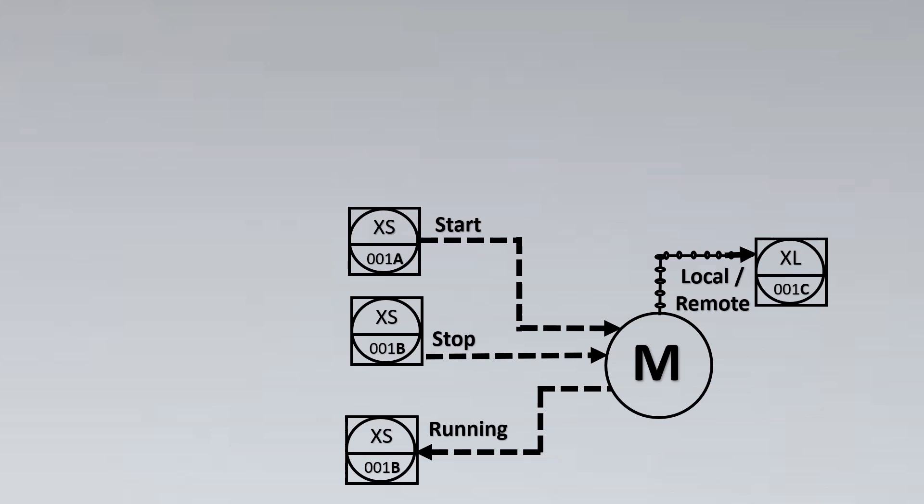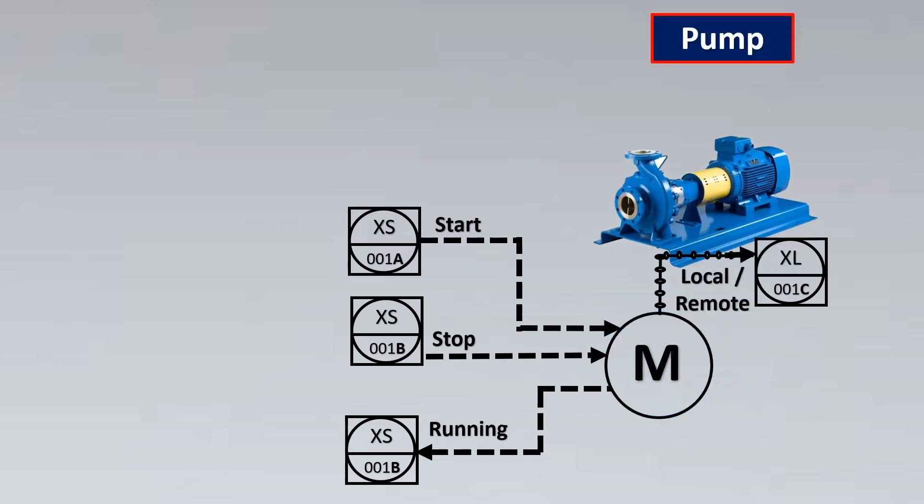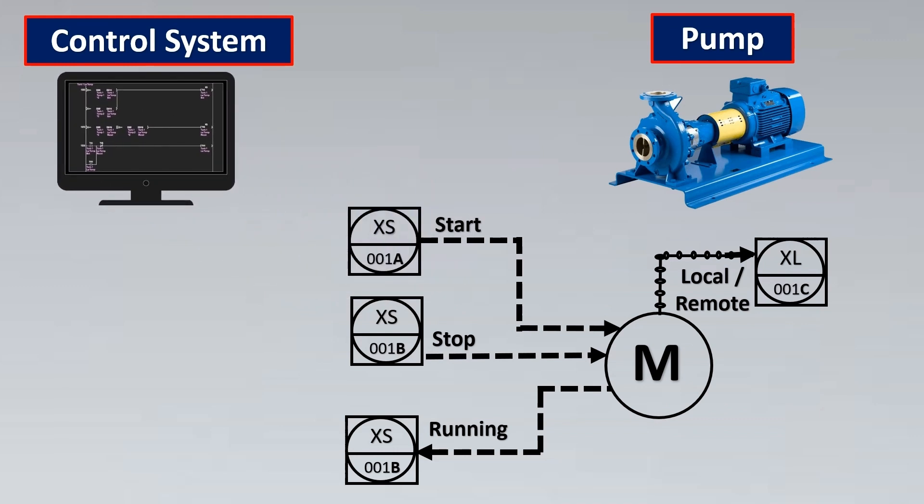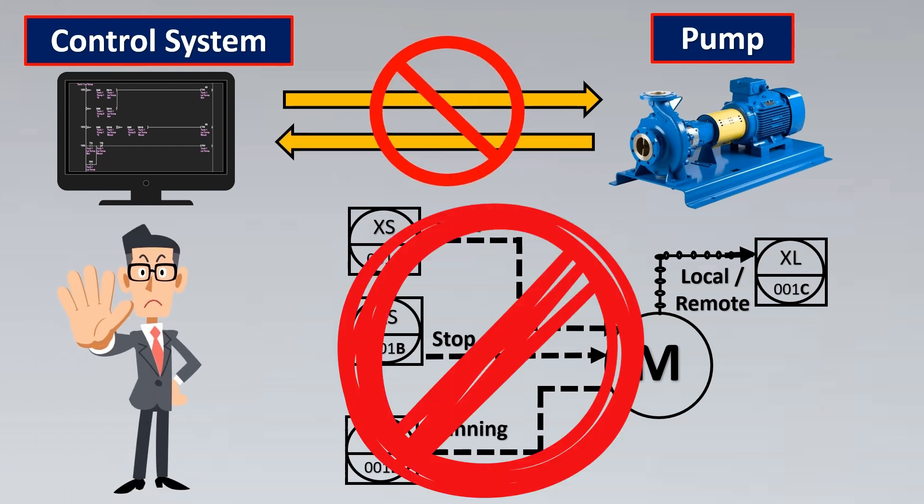For a motor system, the understanding goes something like this: M stands for a pump and a square stands for a control system. Basically, there is communication between the control system to the pump and from pump back to control system. This understanding is incorrect. Let us look in depth and understand how these signals work.